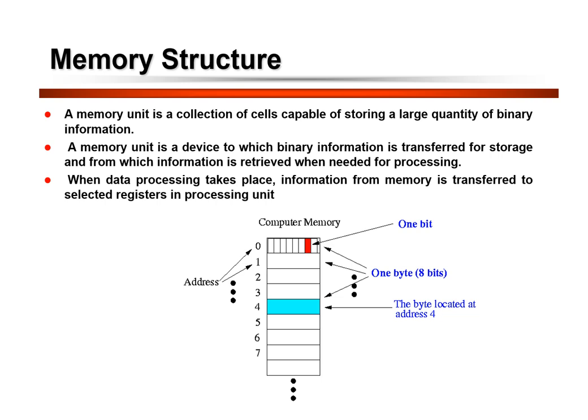It has M data input/output lines through which data is transferred in and out of the memory. It also has two control inputs called read and write. The write input causes binary data on the I/O lines to be transferred into the memory, whereas the read input causes the binary data in a memory location to be transferred out of the memory.